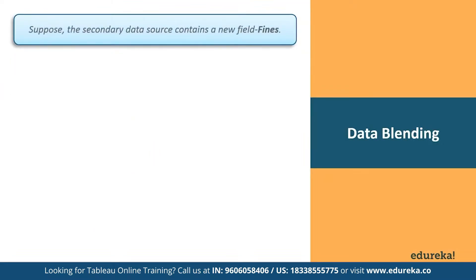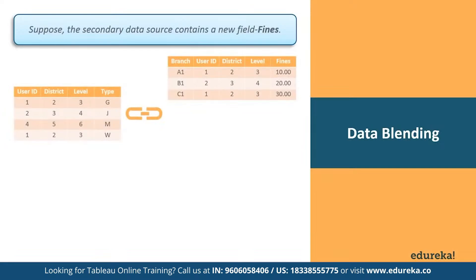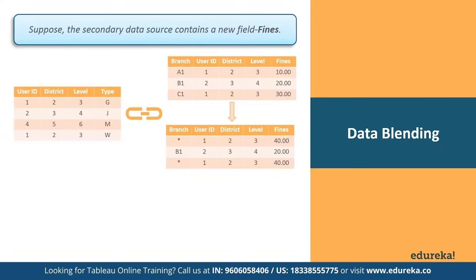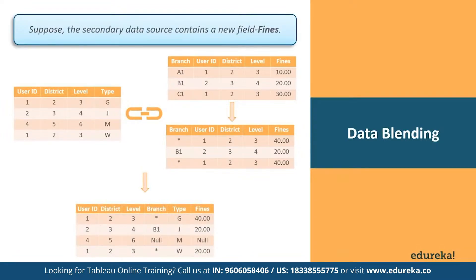Suppose you have the same tables as before, but the secondary data source contains a new field called finds. If the linking fields are user ID, blending takes all the data from the left table and supplements it with data from the right table. In this case, you see the same null values and asterisks as in the previous example. Because the finds field is a measure, the row values for finds are aggregated before the data in the right table is combined. A row in the left table without a corresponding row for finds is indicated by a null value.